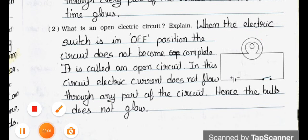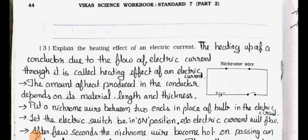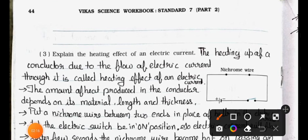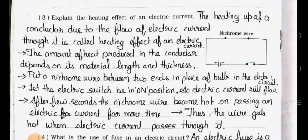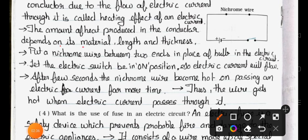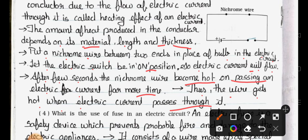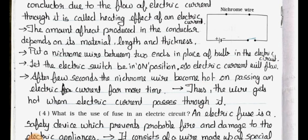Next: Explain the heating effect of an electric current. Here is the nichrome wire connected with positive and negative terminals in an open circuit. Answer: The heating up of a conductor due to the flow of electric current through it is called the heating effect of electric current. The amount of heat produced depends on its material, length, and thickness. Put a nichrome wire in place of the bulb in the electric circuit, let the switch be on, and after a few minutes the wire becomes hot.